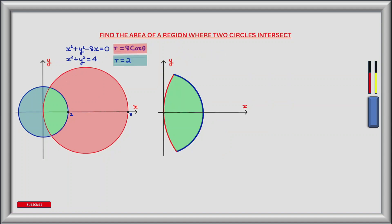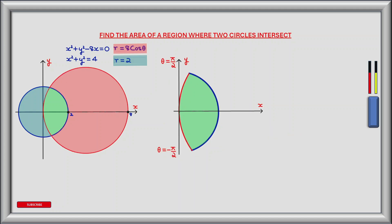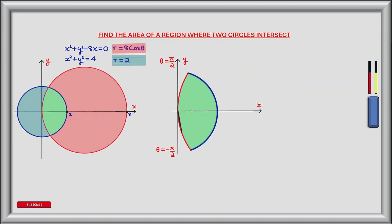Now that we've found the radial distance r of both circles, let's look at the behavior of r when we compute the area of the green region. As r rotates anti-clockwise from theta equals minus pi by two to positive pi by two, the radial distance from the origin is first determined by the red circle. When the red circle intersects with the blue circle at some angle theta, the radial distance is then determined by the blue circle, until it once again intersects with the red circle, at which point the red circle takes over again until theta equals pi by two.